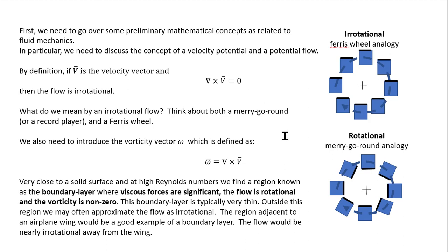We also introduce the vorticity vector omega, which by definition is del cross v. Very close to a solid surface at high Reynolds numbers, you find the region known as the boundary layer, where viscous forces are significant and the flow is rotational with non-zero vorticity. The boundary layer is typically very thin, and outside it the flow is often approximated as irrotational — for example, away from an airplane wing.